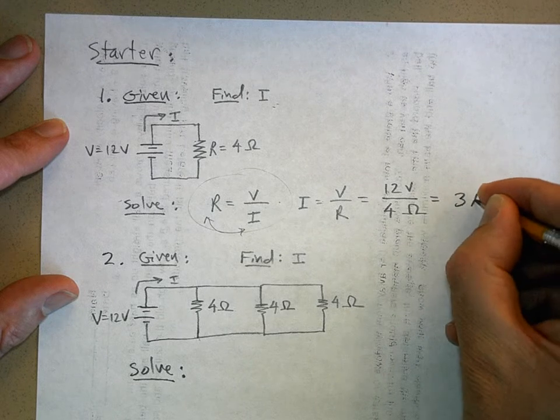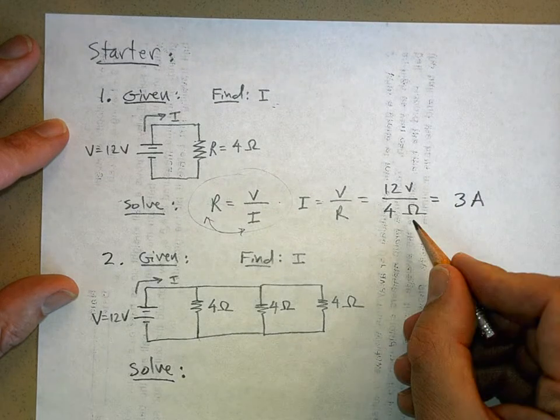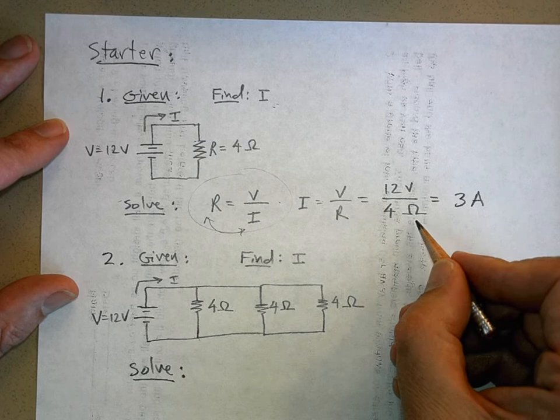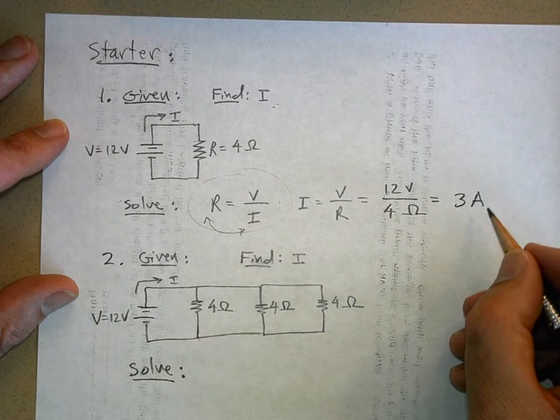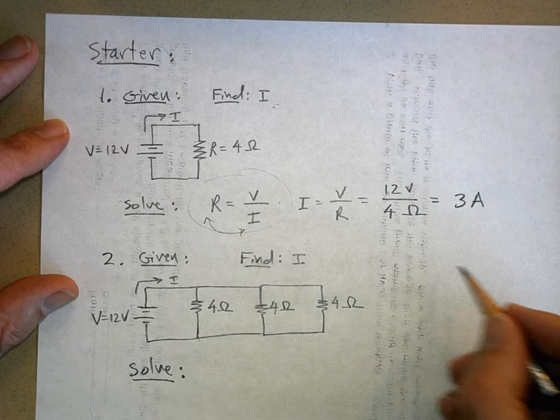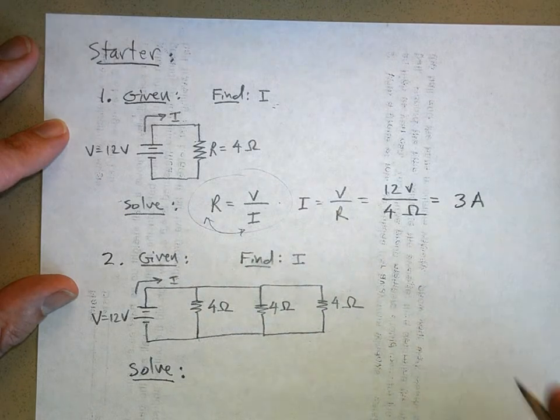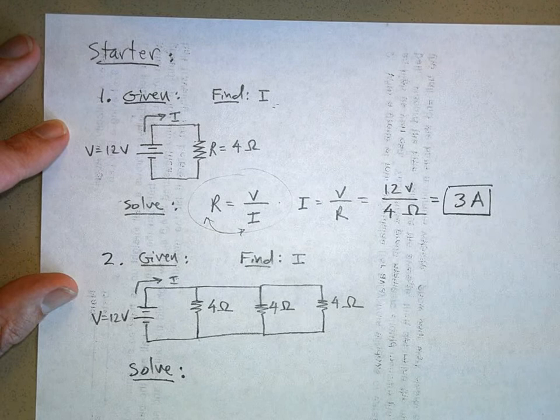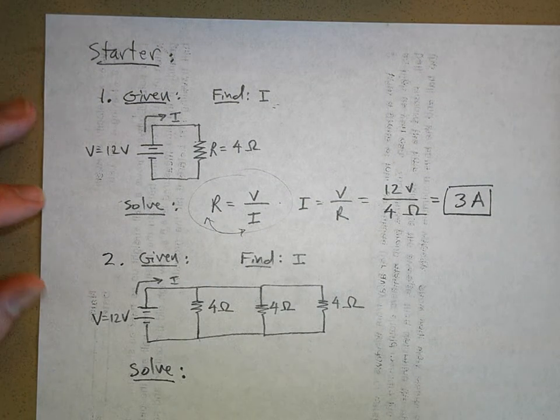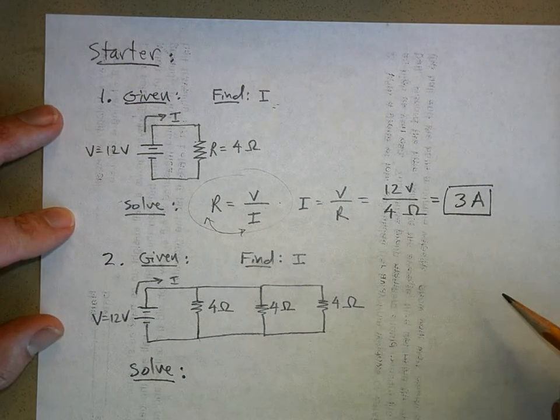Remember that an ohm is the same thing as a volt per amp, so the volts cancel, you have one over one over amps, which is just amps, and then we put a box around our answer. This is how I would want you to solve a problem like this on the quiz.